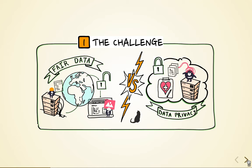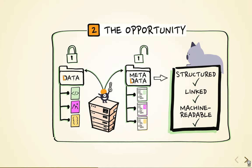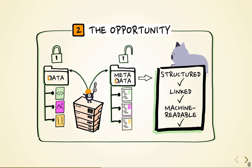Should we err on the side of fairness or of data privacy? Or do we even have to choose? Ideally no, and in practice also no, because we have a powerful opportunity in the form of linked, structured, and machine-readable metadata.